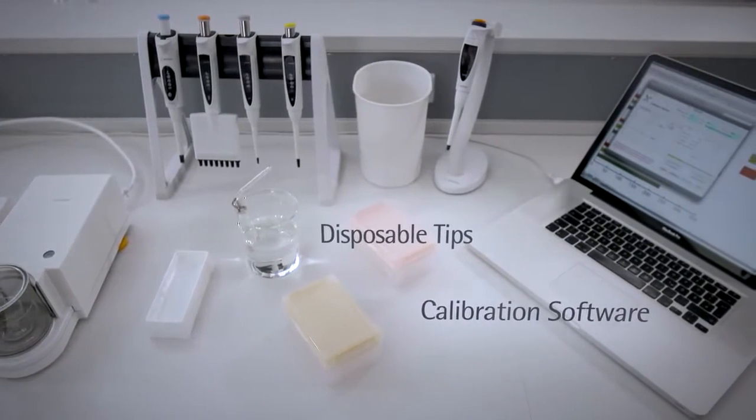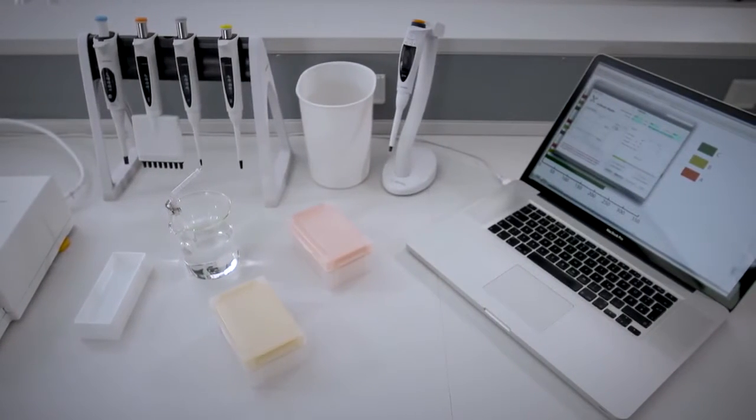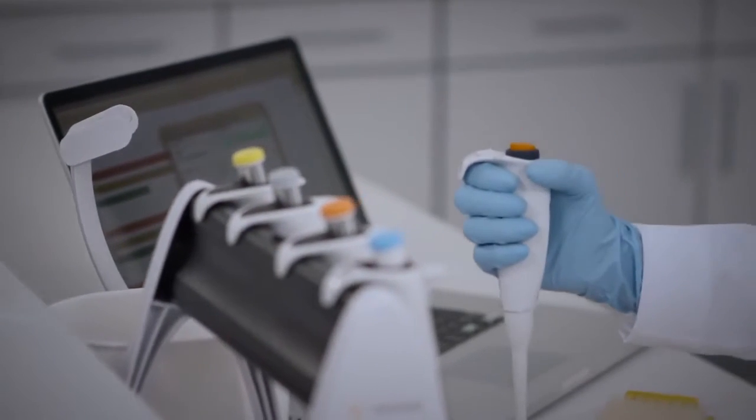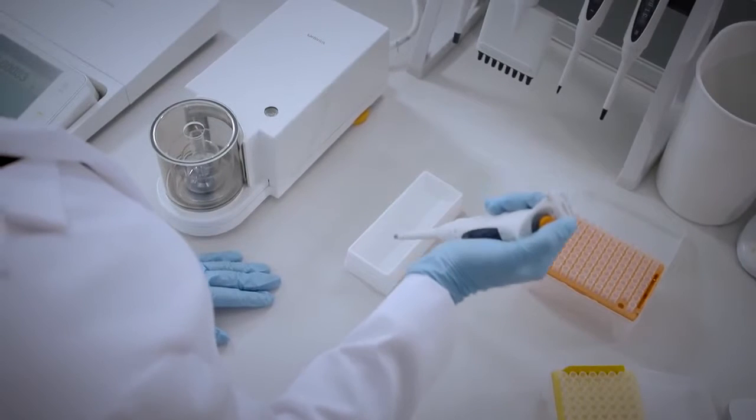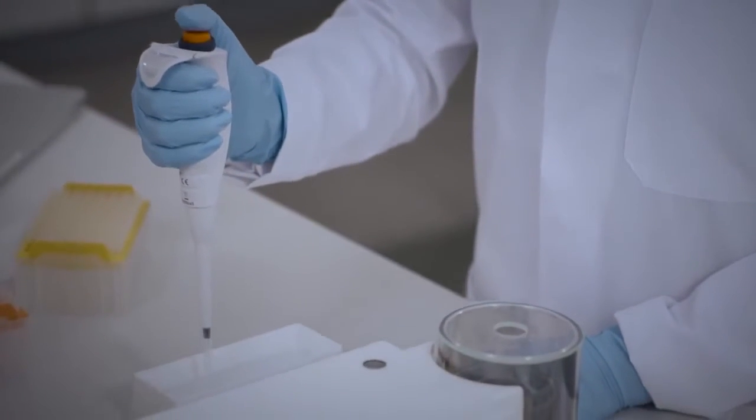Besides the equipment, the procedures are important for the reliability of calibration results. First of all it's important to pre-wet the pipette three to five times before starting the calibration to eliminate evaporation of the water into the airspace inside the pipette.